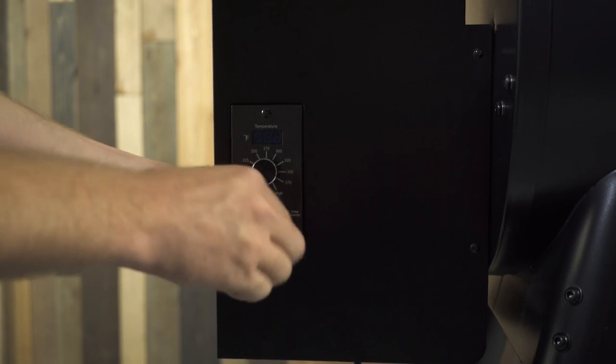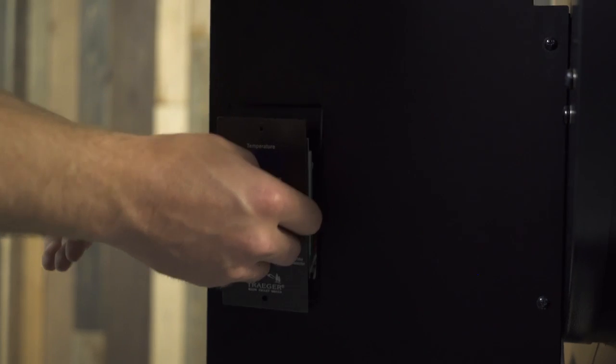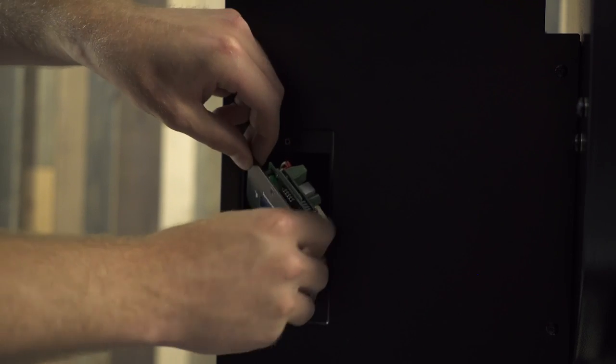Remove the two Phillips head screws that hold your controller to the pellet hopper. After that, you'll want to push the controller back through the mounting hole on your hopper.